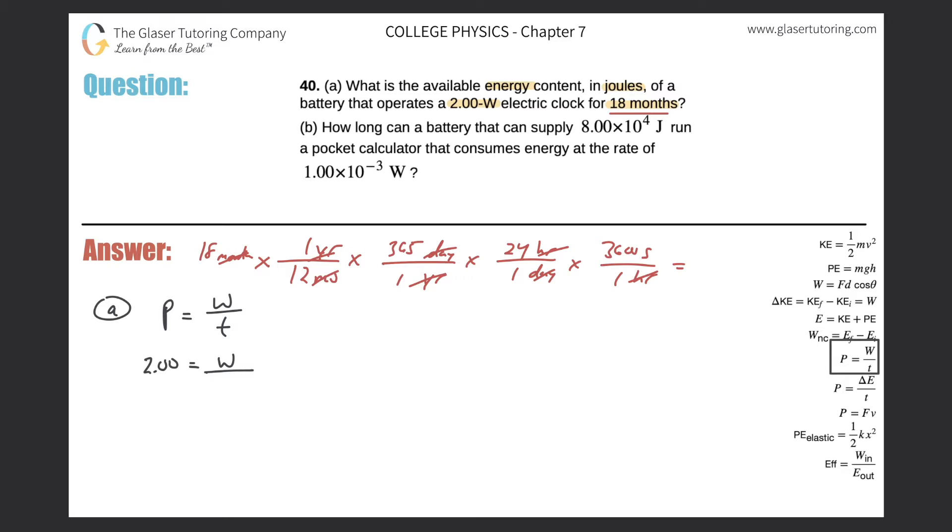Okay great, so let's just do the conversion: 18 times 365 times 24 times 3600, all divided by 12. So this works out to be 4.73 times 10 raised to the 7, and that is in terms of seconds.